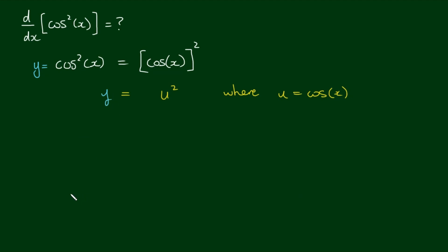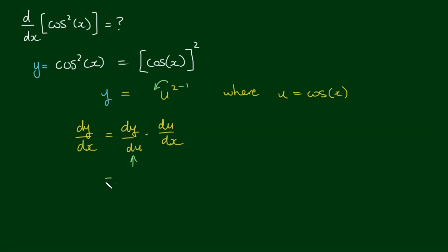Now we can use the chain rule because we have a function that is raised to a power, or essentially a function of another function. So by the chain rule, we have dy/dx is equal to dy/du multiplied by du/dx. For the first part, we simply apply the power rule — bring down the power, minus 1 — so this gives us 2 times u. For the second part, we are taking the derivative of u, so cosine of x differentiates to negative sine x.